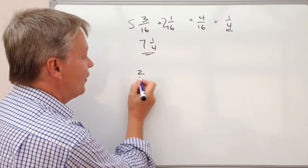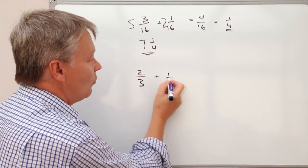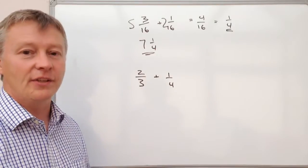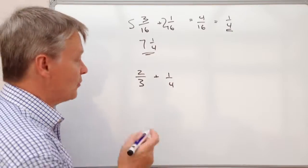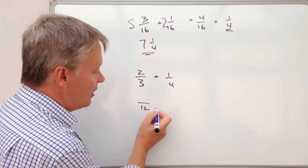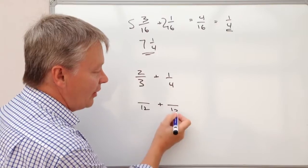So let's say we've got 2/3 plus 1/4. Well the thing we need to do with that is make sure these numbers become the same numbers. So what I'm going to do is I'm going to convert them to something over 12 plus something over 12.